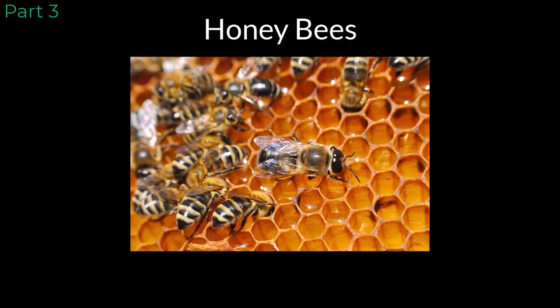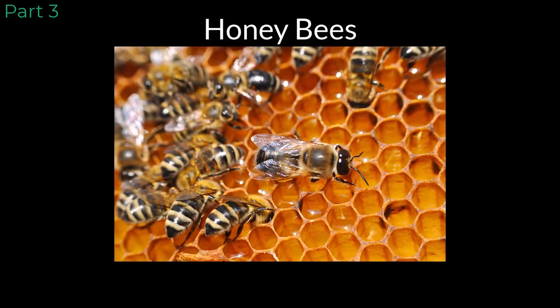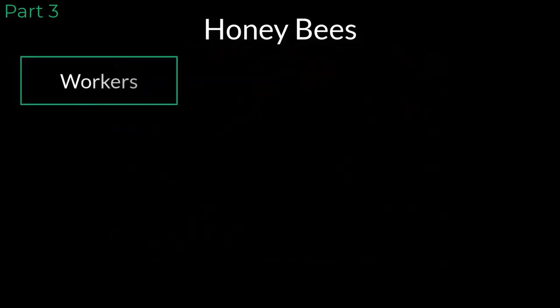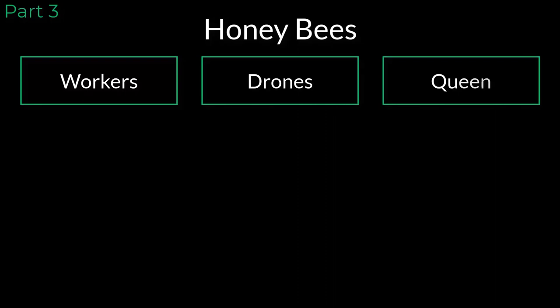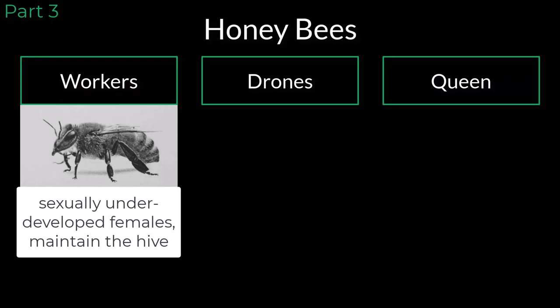Let's expand our thinking and look at another species: honeybees. Honeybees are social insects that live and work together in a hive. There are three different types of honeybees that are found in a hive: workers, drones, and the queen bee. Each type of bee has a specific role within the hive. Worker bees are sexually underdeveloped females, which means they are not capable of reproducing. They are responsible for gathering food, maintaining the hive, and caring for the queen bee. This keeps the hive clean and functional and ensures that all the bees are fed.